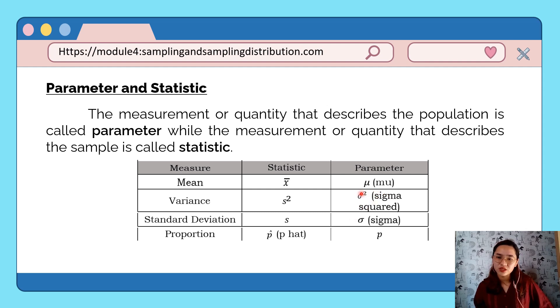For population variance, that is sigma squared (σ²), and for standard deviation, that is sigma (σ). For the proportion, it's just p, and when it's sample proportion, it has a hat on it.